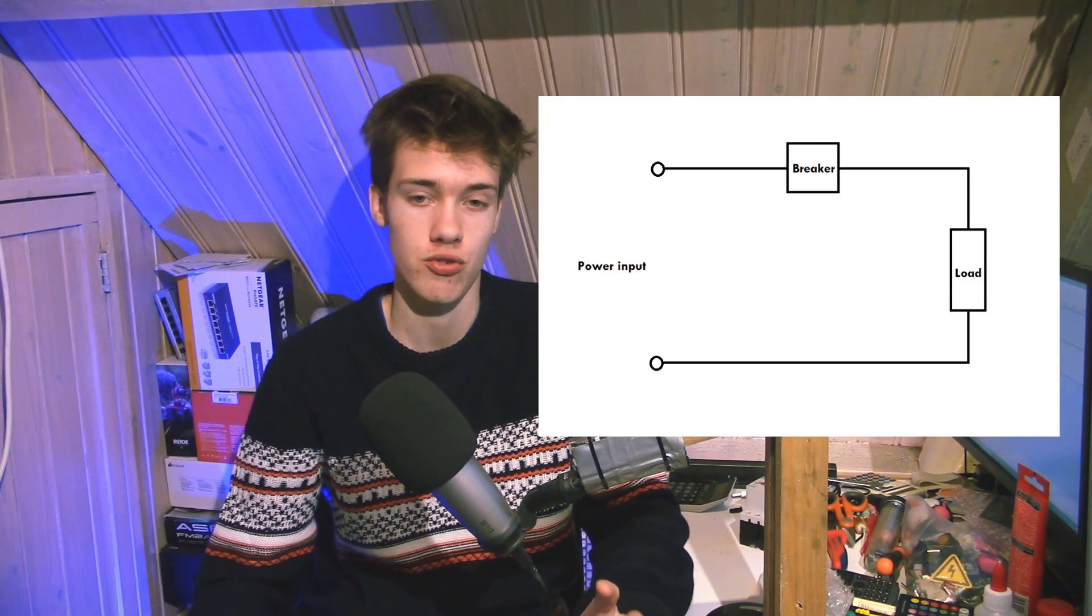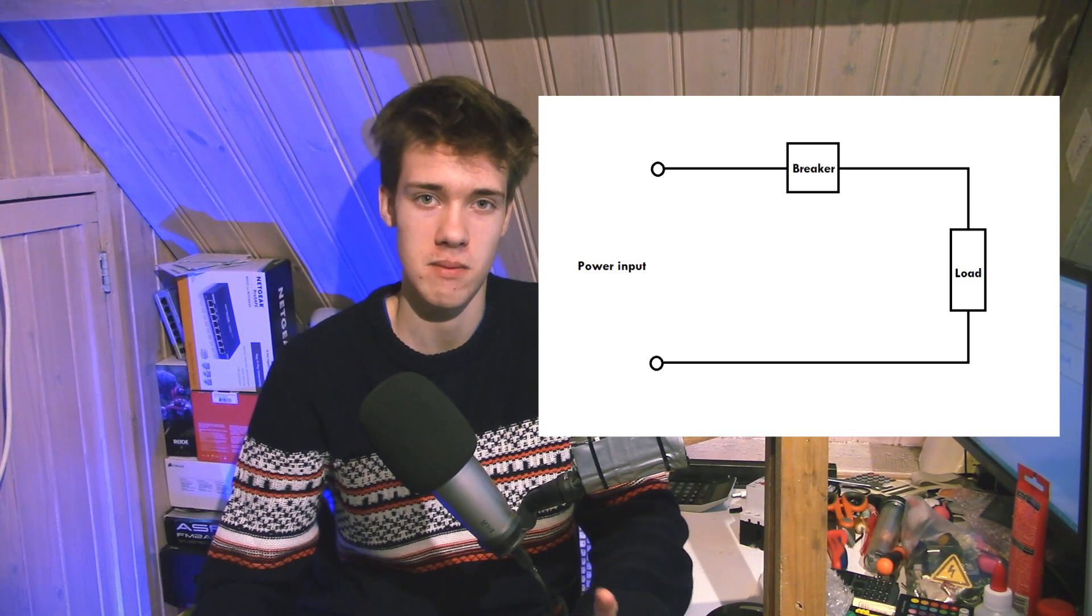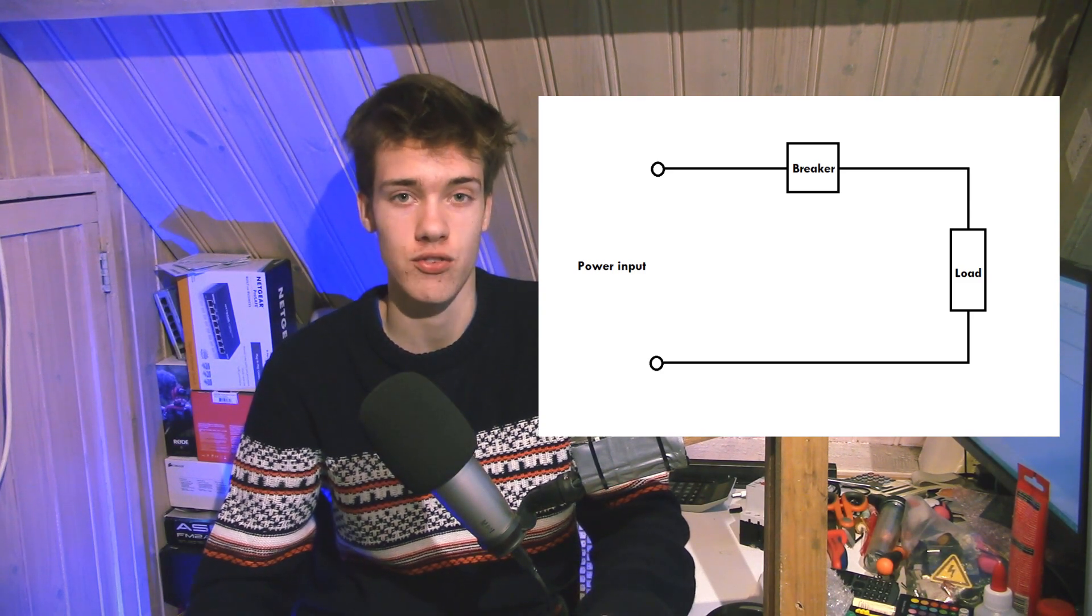So once you've fixed the problem, figured out the reason why you were drawing so much current and solved that problem, you then also have to replace the fuse. A more modern type of overcurrent protection is the circuit breaker. Now a circuit breaker does exactly the same thing as a fuse, except it doesn't get destroyed in the process. So once you've fixed the problem, you can simply go in and reset the breaker and keep using it.